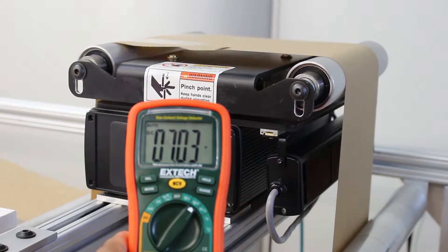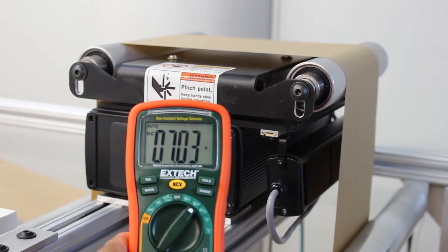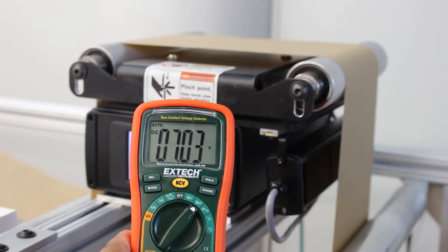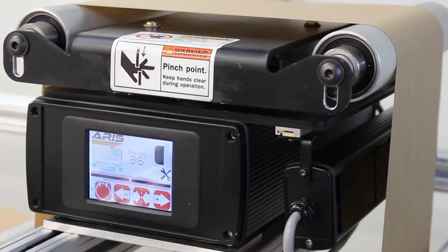The analog width measurement option can be used for quality monitoring and real-time control of web width in extrusion processes. For low-modulus webs, the width measurement can also be used to monitor nicking in the web.